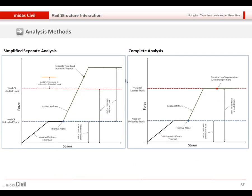So this is the difference between the simplified analysis and complete analysis. In case of the simplified analysis is applied, then if there is only the thermal load, this type of the spring will be applied. And then also different spring stiffness will be applied for the train load. And we will simply make the summation for these results.